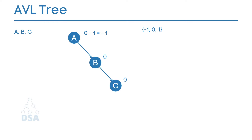Now insert C. C is greater than A, so go right; C is also greater than B, so insert to the right of B. The balance factor of C is 0. Recalculating B's balance factor: it has no left subtree but has a right child, giving minus 1 — still balanced. Recalculating A's balance factor: the height of the left subtree is 0 and the height of the right subtree is 2, giving 0 minus 2 equals minus 2. Minus 2 does not lie in the valid set, so this is not a balanced binary search tree and we must balance it.